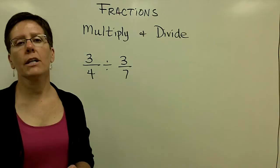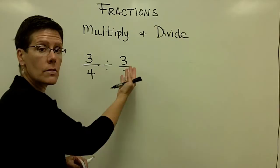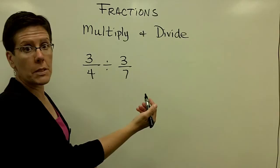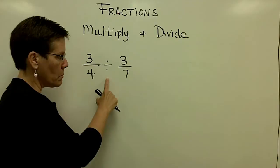When you divide with fractions, you have to invert the second fraction, the 3 sevenths. You have to flip it and call it 7 thirds and then follow the process of multiplication. Some people say skip, flip, and multiply.